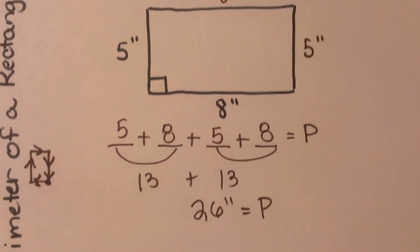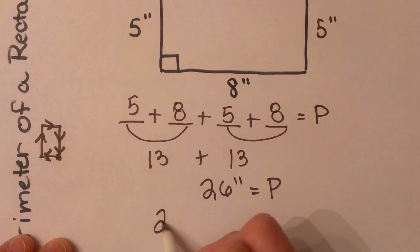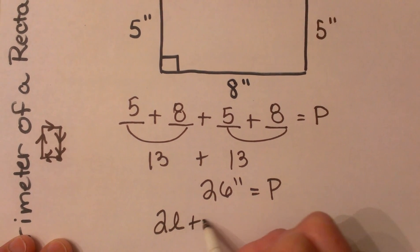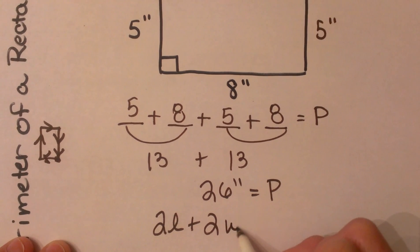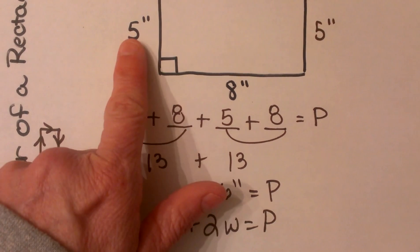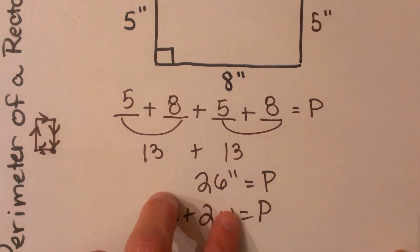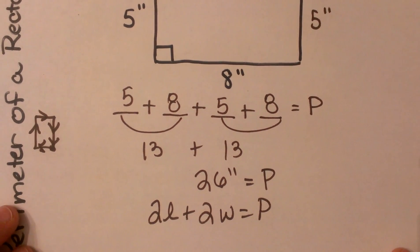That is one option to add all the sides. The other option is to use a formula: 2 lengths plus 2 widths equals the perimeter. We can plug in 5 for the width and 8 for the length. They are interchangeable because you're multiplying by 2.